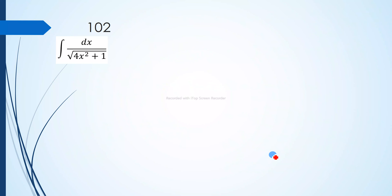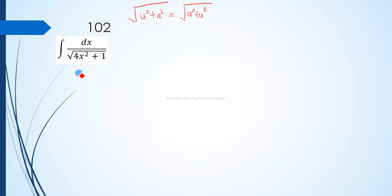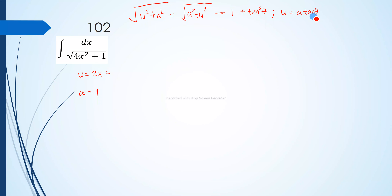For our second example, we are asked to find the integral of dx over the square root of 4x squared plus 1. Looking at the expression under the radical, it is in the form u squared plus a squared. Our u is 2x and our a is 1. This corresponds to the identity 1 plus tangent squared theta, so we let u equal a tangent theta — simply tangent theta since a equals 1.